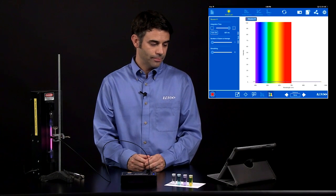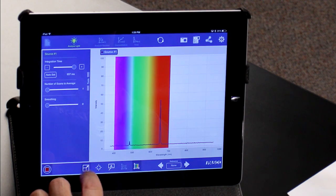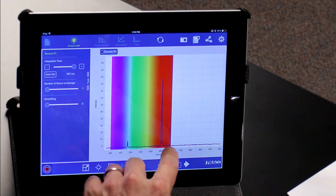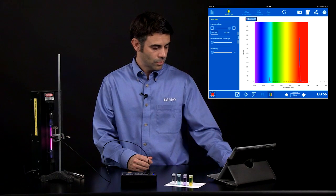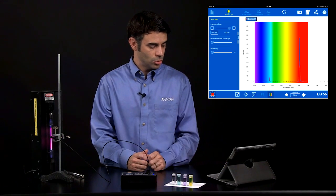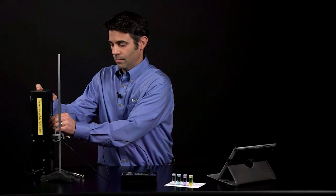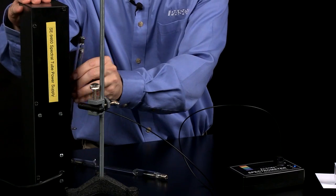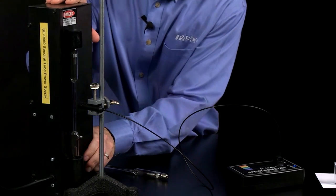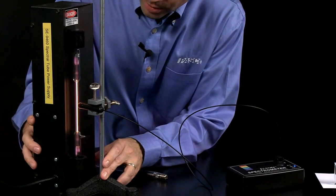After that process is complete, you'll see more peaks on your spectrum. You can auto scale that. And there's our hydrogen emission spectrum. I'm going to stop this and put another tube in just to show you something.